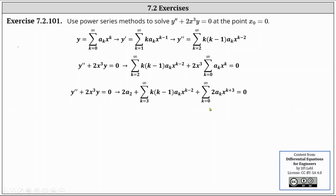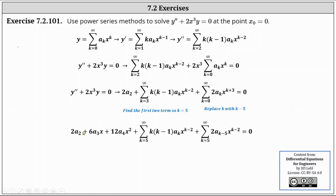We want these two sums to have the same lower limit and the same exponent on x. We find the first two explicit terms of the left sum, making the lower limit k = 5. When k = 3, we get 3·2·a₃·x¹; when k = 4, we get 4·3·a₄·x². So we write: 2a₂ + 6a₃x + 12a₄x² plus the sum from k = 5 to infinity of k(k−1)a_k x^(k−2).